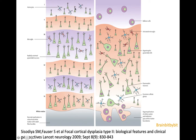The normal human neocortex consists of six layers in which the neurons and glial cells are arranged. Layer 1 is located on the outside, near the subarachnoid space, and layer 6 borders the white matter.